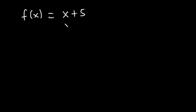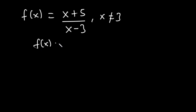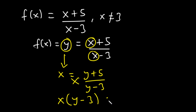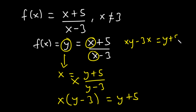Let's say we have a function f(x) = (x + 5) / (x − 3), where x is not equal to 3. To find the inverse, we replace f(x) with y: y = (x + 5) / (x − 3). We interchange y and x to get x = (y + 5) / (y − 3), then cross multiply: x(y − 3) = y + 5. Distributing gives xy − 3x = y + 5.